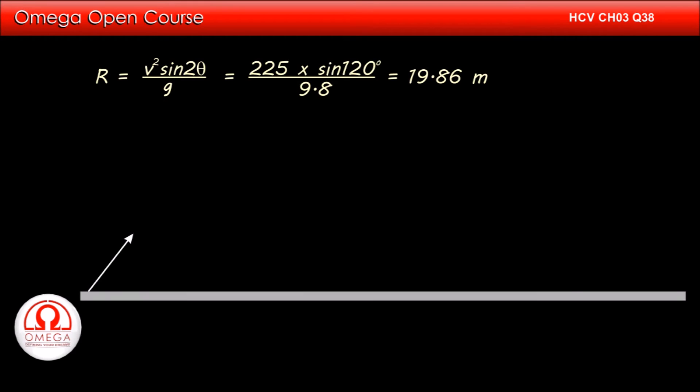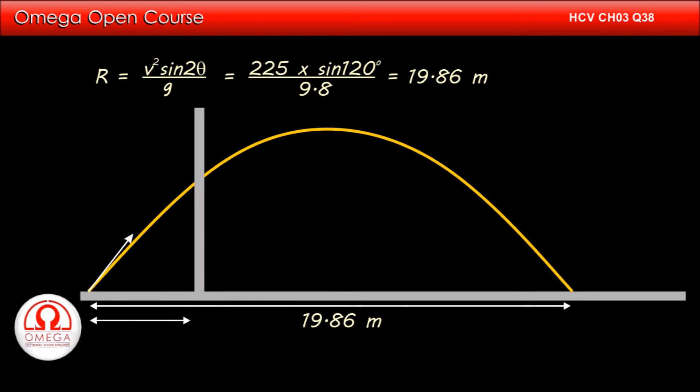Thus, if undisturbed, the ball will fall at a distance of 19.86 meter. Hence, if the wall is at a distance of 5 meter from the point of projection, the ball will hit the wall.